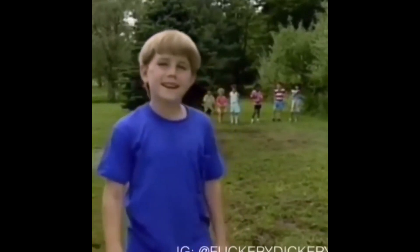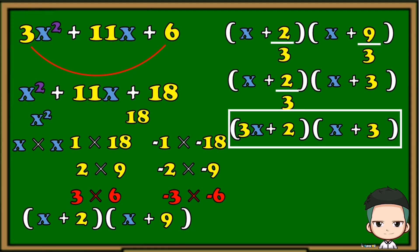Wait a minute! Take note that this method is not always applicable. Sometimes you need to use the method of trial and error and check your answer by using the FOIL method. And that's how we factor a general trinomial.